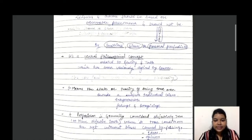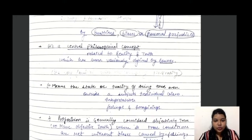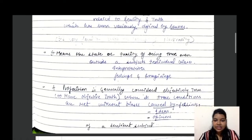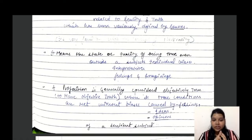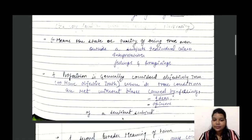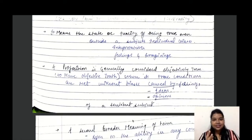Objectivity means the state or quality of being true even outside a subject's individual biases, interpretation, feelings, and imagination. A proposition is generally considered objectively true when its truth conditions are met without bias caused by feelings, prejudices, or sentiments of a subjective nature.